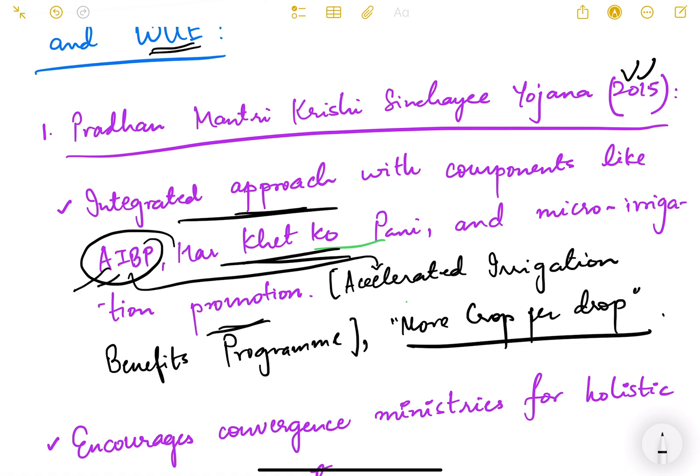One is AIBP which is Accelerated Irrigation Benefits Program. Then Har Khet Ko Paani meaning giving water or irrigation facility to every farm and Micro Irrigation Promotion meaning promoting irrigation techniques like drip irrigation and sprinkler irrigation which we have seen in the previous video.